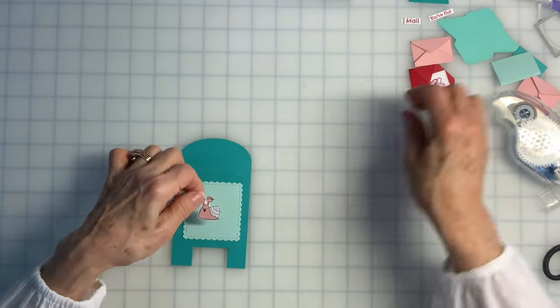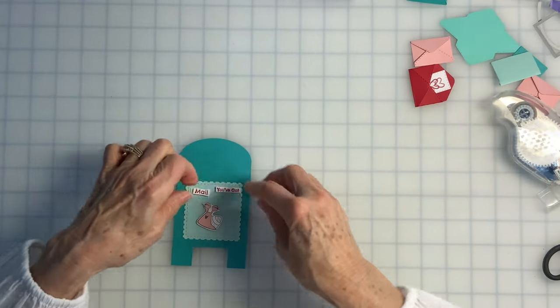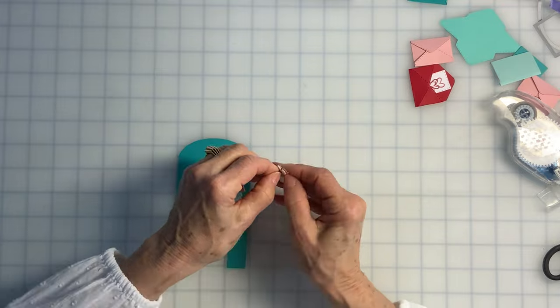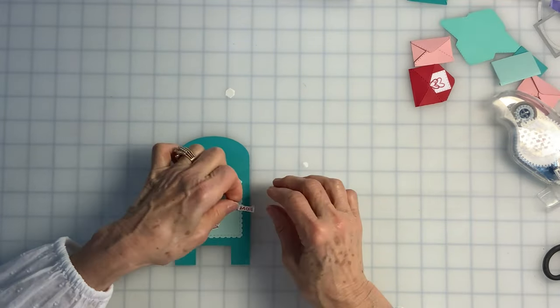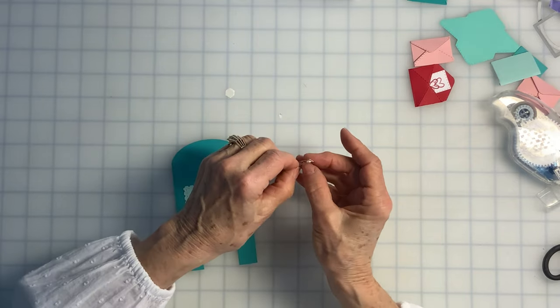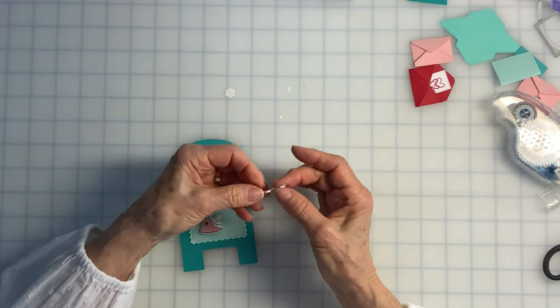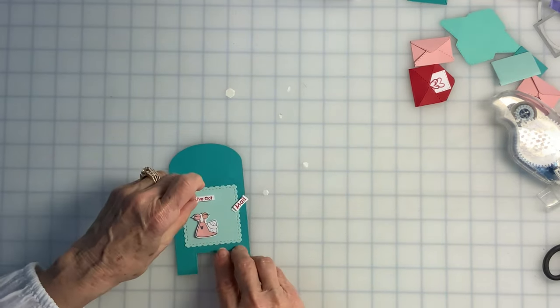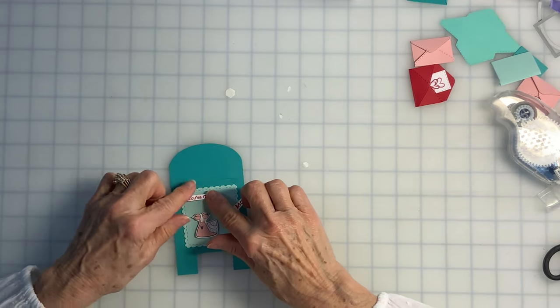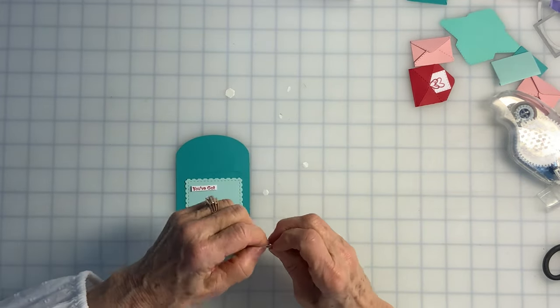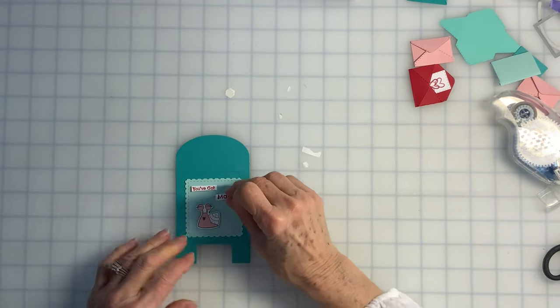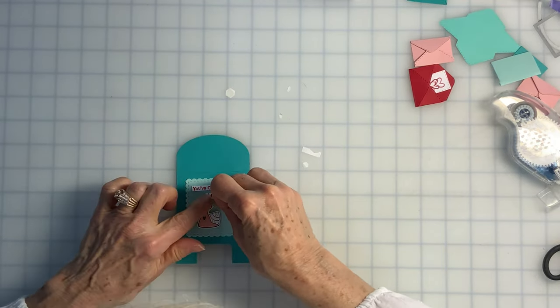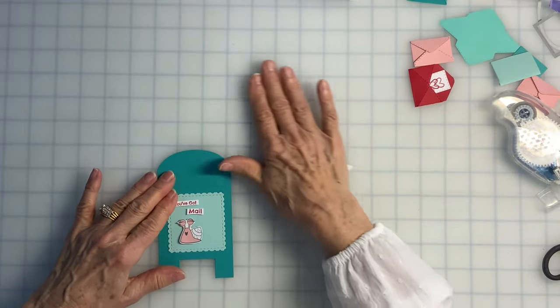So next I can put my snail and my little message on here. I'm using dimensionals to attach these little pieces. I have the normal-sized dimensionals on my snail, and I have the mini-dimensionals on the back. In fact, this one's even cut in half, it's so small. So my little snail is saying, you've got mail.